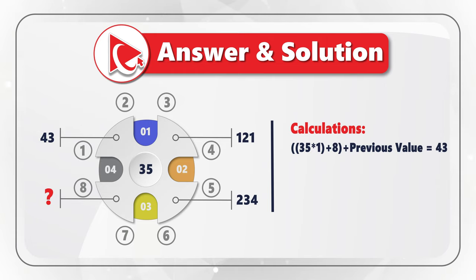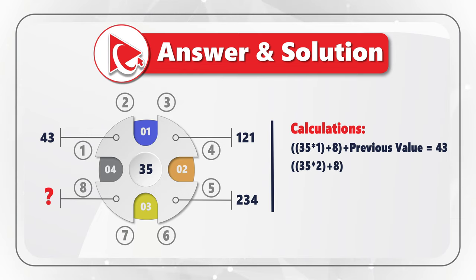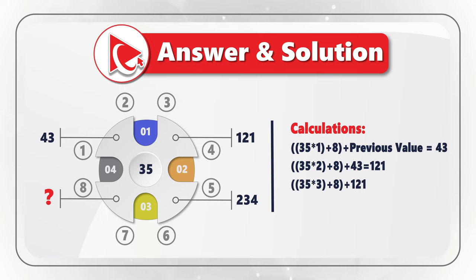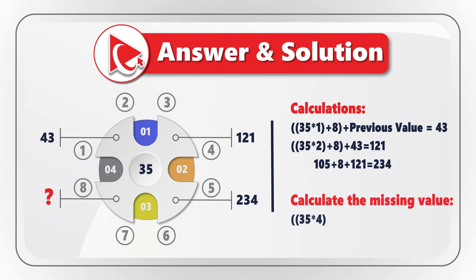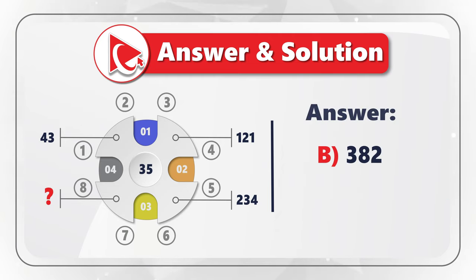Let's look at the examples. The first number is calculated as 35 × 1 + 8 + 0 = 43. The second value is (35 × 2) + 8 + 43 = 121. The third number is (35 × 3) + 8 + 121 = 105 + 8 + 121 = 234. So to calculate the missing number, we multiply 35 by 4, add 8, add 234, which equals 382. The correct answer is choice B, 382.